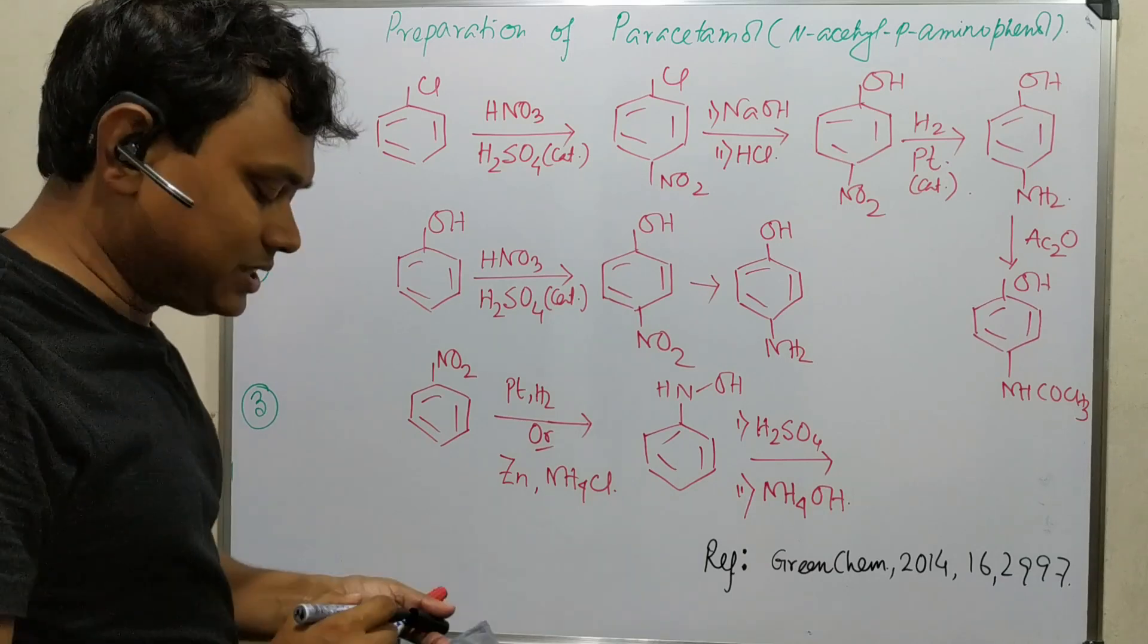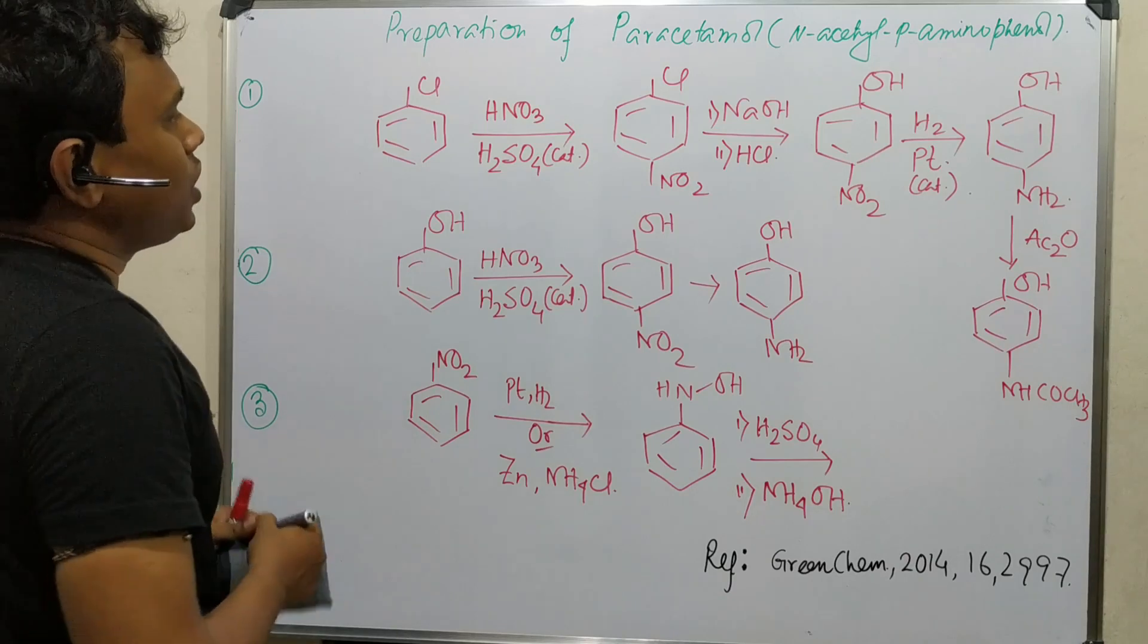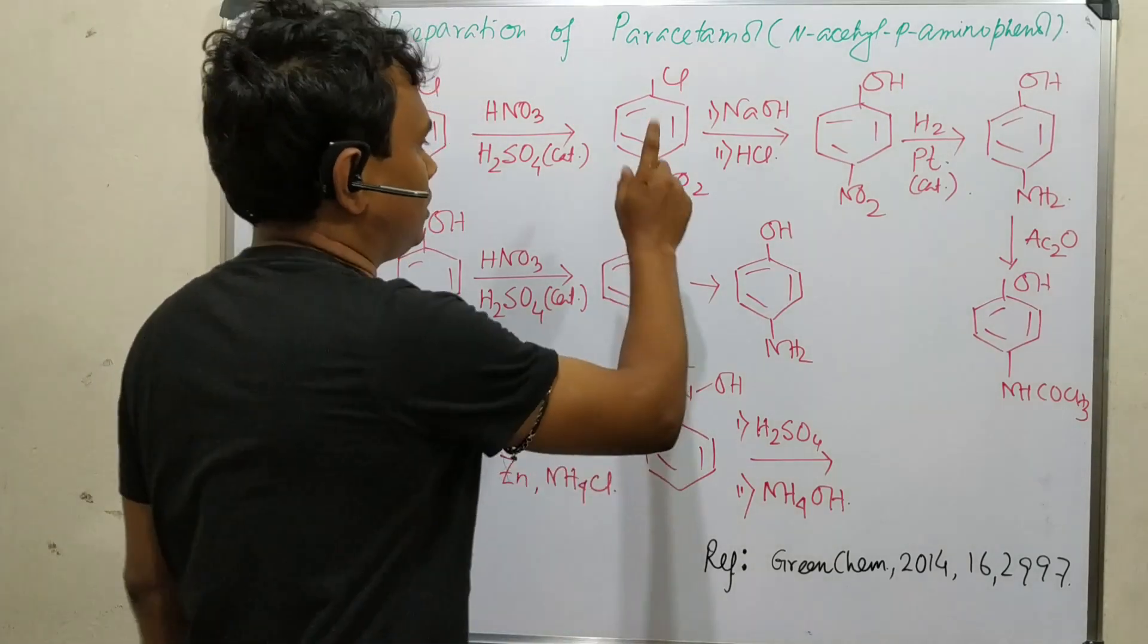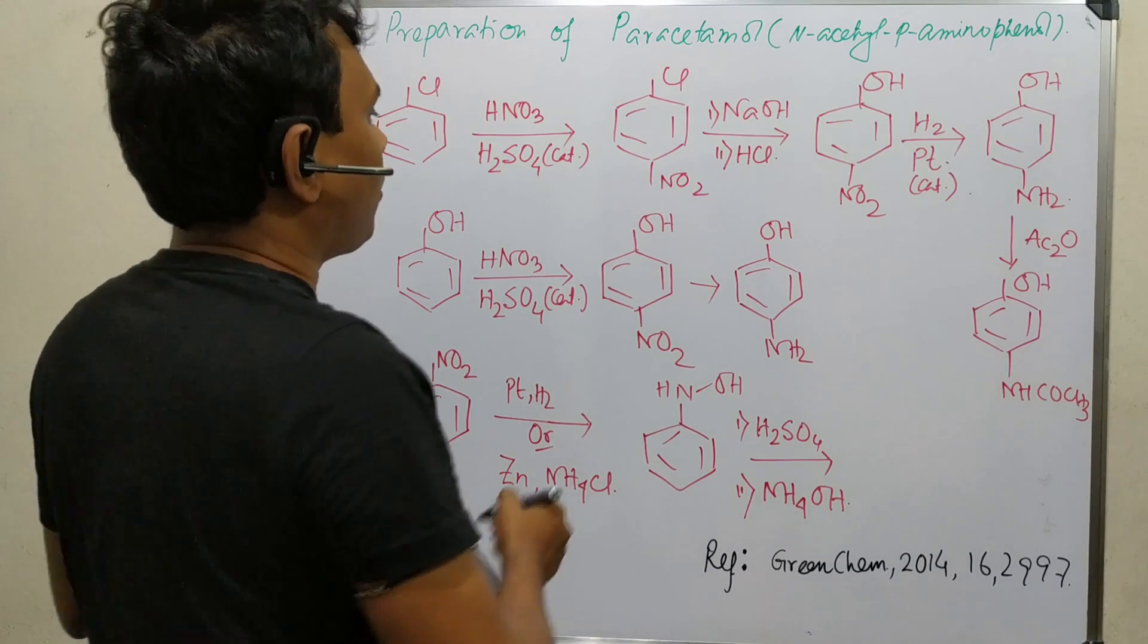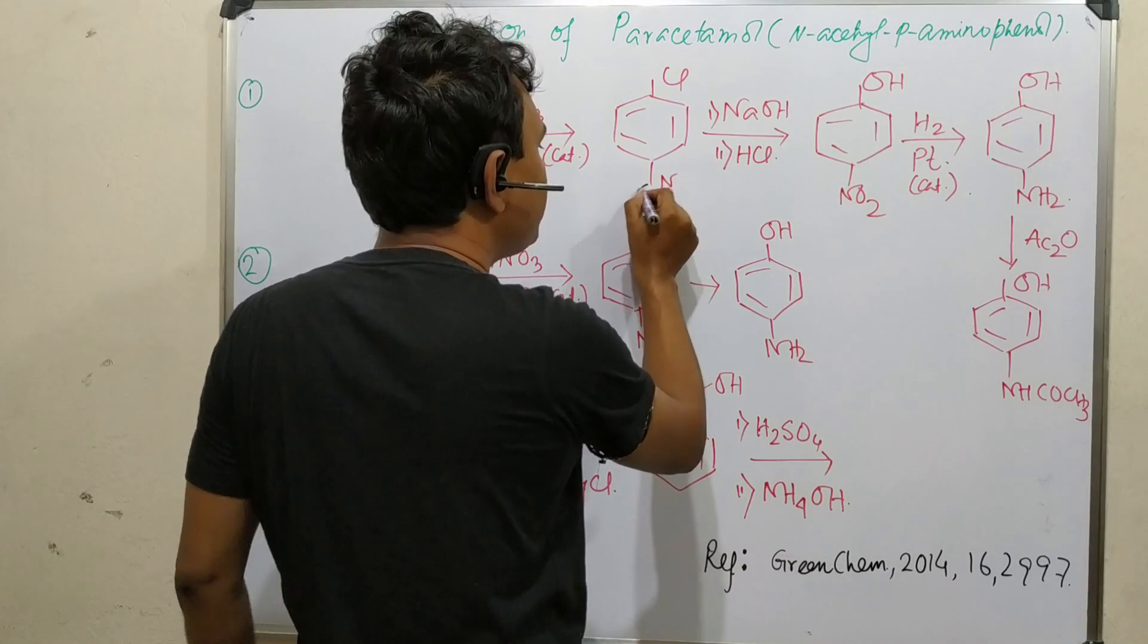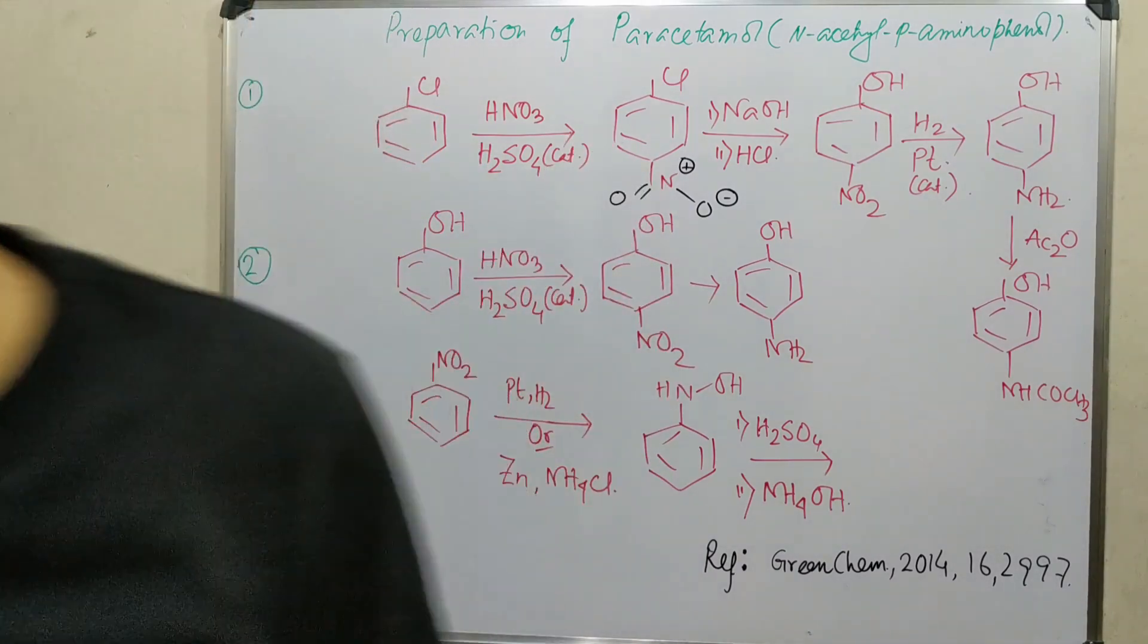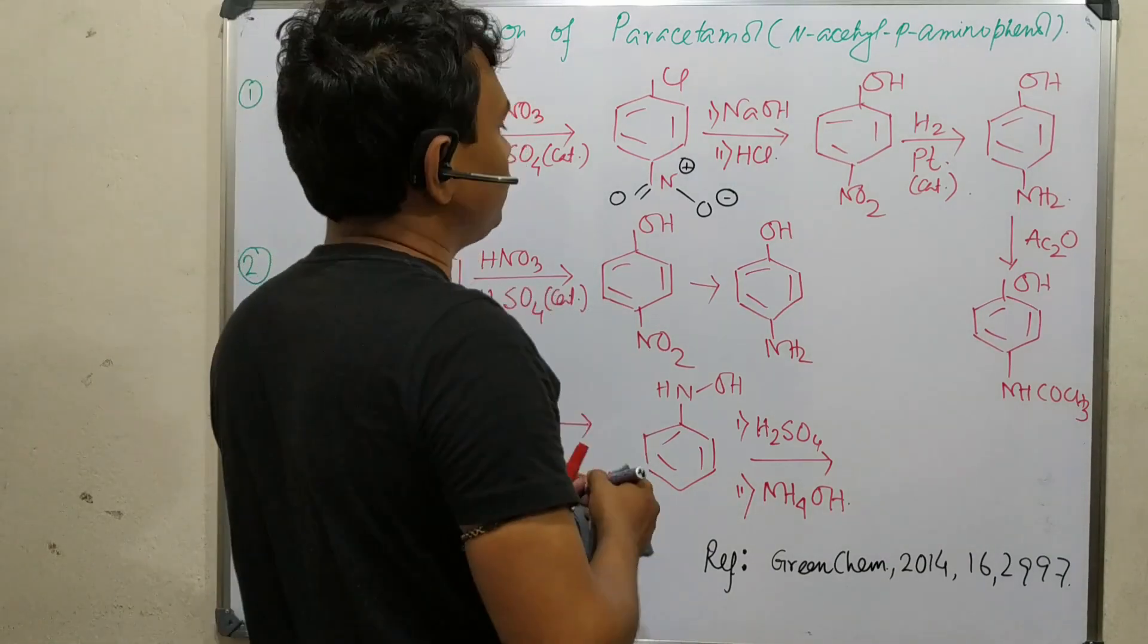Nitration of chlorobenzene - and all these reactions I believe you know, it's not that difficult. We know the nitration of chlorobenzene produces both ortho and para. They are separated and the para isomer is used for this substitution of chloro with hydroxyl. Why? Because this nitro group is electron deficient and it can hold electrons. That is the reason this Cl is substituted via aromatic nucleophilic substitution.